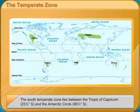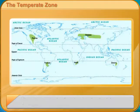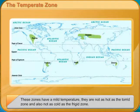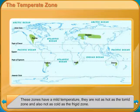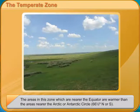The areas in this zone which are nearer the equator are warmer than the areas nearer the Arctic or Antarctic Circle, 66.5 degrees north or south. This zone has four distinct seasons, and winters are cold. The vegetation here varies according to temperature and rainfall. Where there is little rain, there are grasslands, prairies, or steppes.